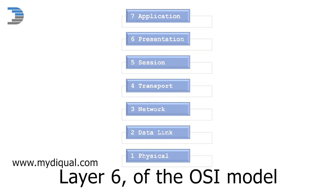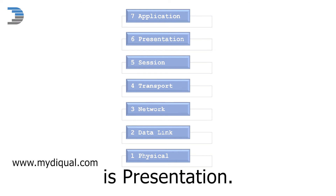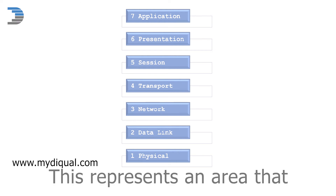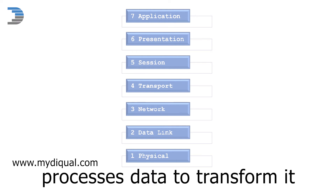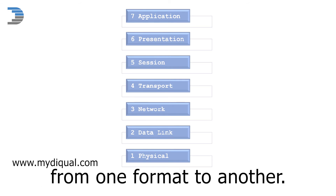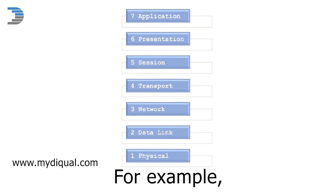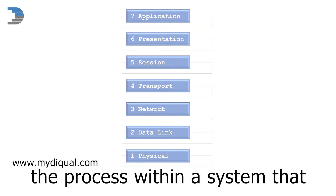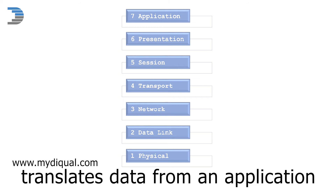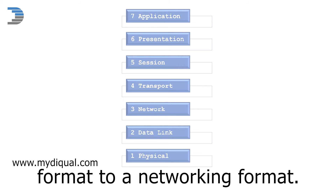Layer 6 of the OSI model is presentation. This represents an area that processes data to transform it from one format to another. For example, the process within a system that translates data from an application format to a networking format.